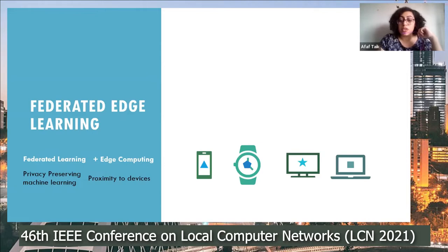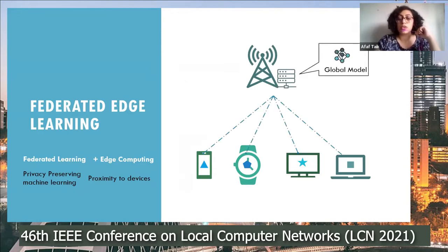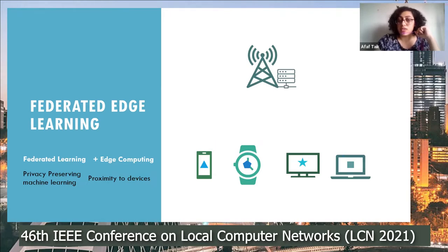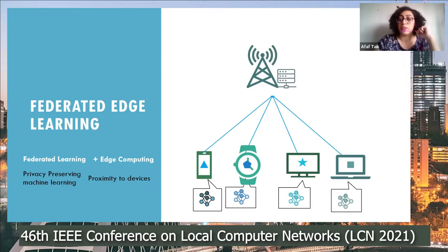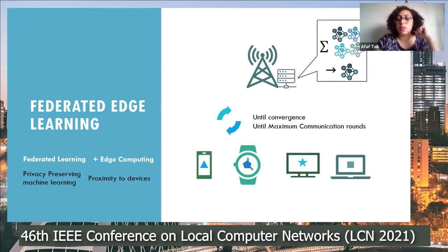In this setting, user equipment consisting of edge devices collaboratively train a model with a multi-access edge server. The training is an iterative process—we call it a communication round. The MEC server sends a global model to a subset of devices. Each device trains the global model on their local data and creates a new local model, then sends the updated model back to the MEC server. The MEC server aggregates these models to create a new global model, repeating until convergence or a maximum number of rounds is reached.